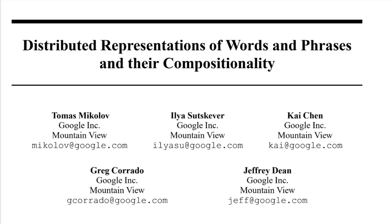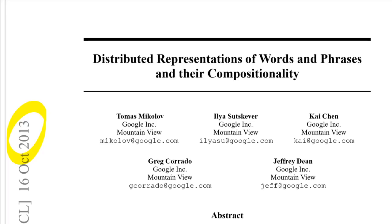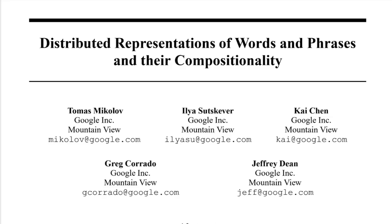Today we'll look at 'Distributed Representations of Words and Phrases and their Compositionality' by Thomas Mikolov, Ilya Sutskever, Kai Chen, Greg Corrado and Jeffrey Dean. This is a historical paper — one of three papers that introduces the original Word2Vec algorithm. Word2Vec was extremely influential in NLP basically until recently, where it's gone out of fashion a bit with the rise of things like ELMo and BERT, but it's still very relevant. This paper was released in 2013, so it's seven years later now.